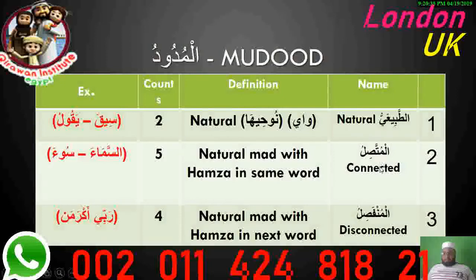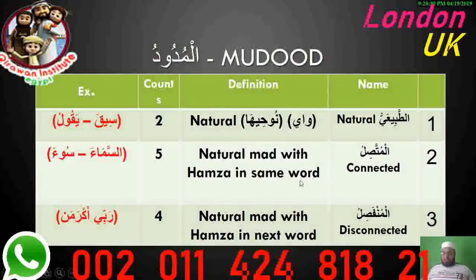We'll build everything on Madd Tabi'i — you need to focus on it first because many Madd categories are built on it. Al-Madd Al-Muttasil is Madd Tabi'i followed by Hamza in the same word, like 'As-Samaa.' Here the Alif is Madd Tabi'i preceded by Fatha, but there is Hamza in the same word, so you do it for five counts: As-Samaa.